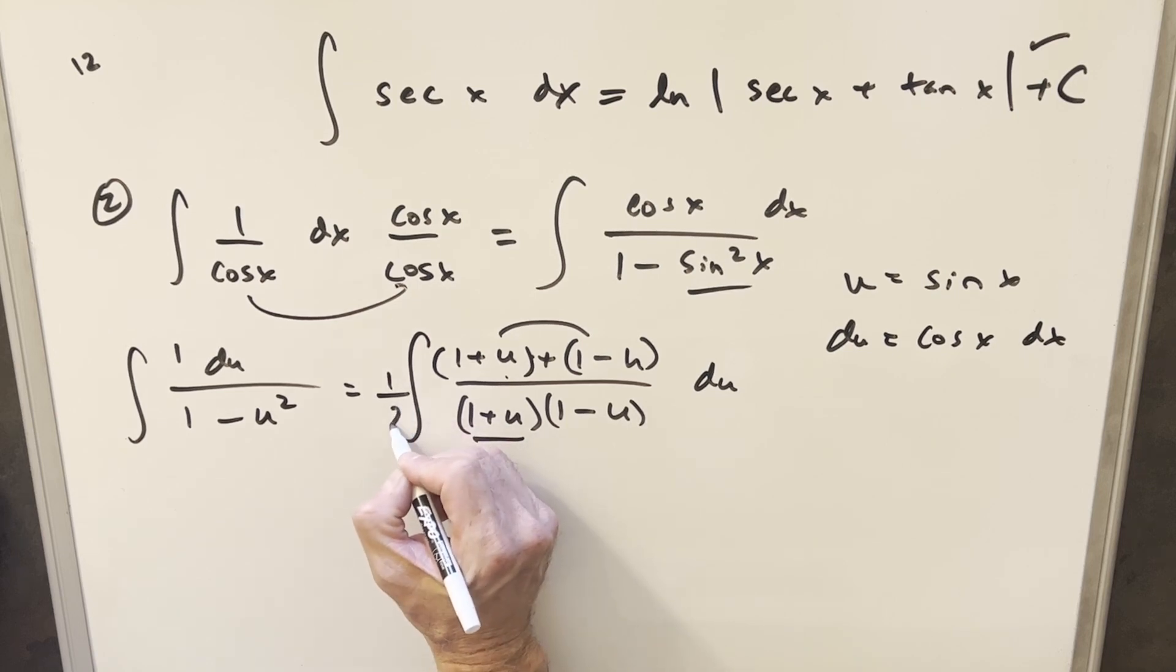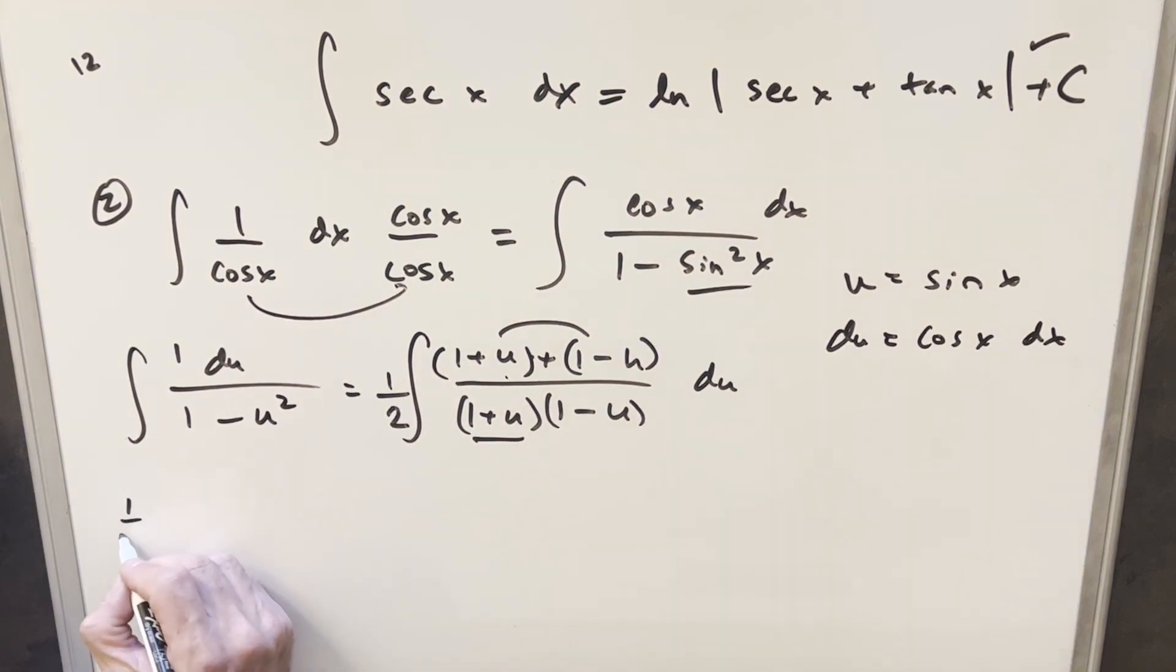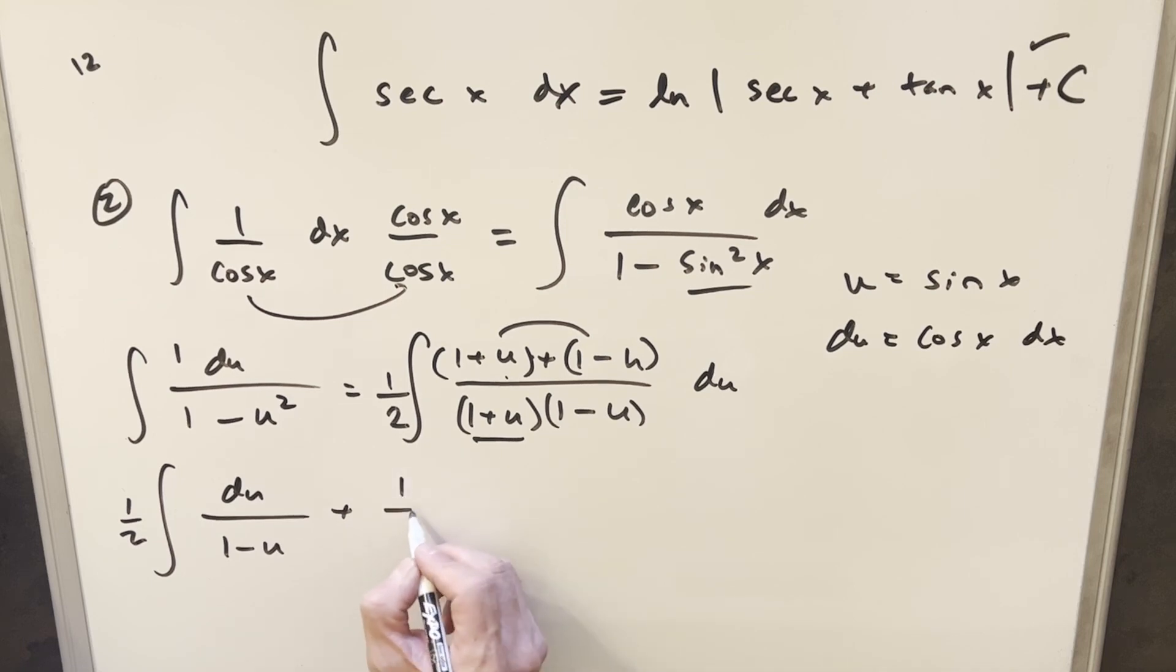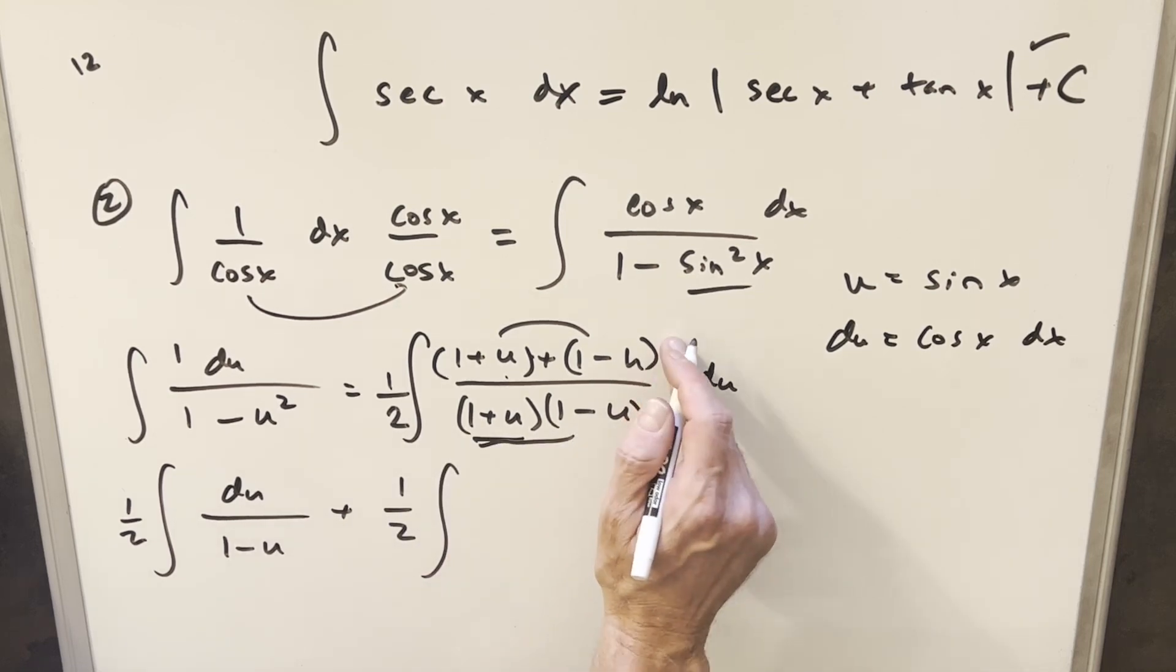Now we'll go ahead and split this into two integrals. So in the first one, the 1 plus u's are gonna cancel, so I'm just gonna write this as du over 1 minus u. And then for our second one we're gonna have our 1 half out front, but then the 1 minus u's are gonna cancel here and I'm just gonna have du over 1 plus u.